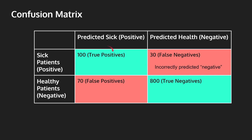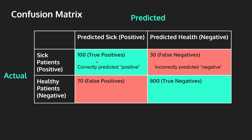The top left square is called the true positive. It basically means our model predicted positive and the patient is indeed sick. So we predicted positive and the patient is positive — this is a correct prediction. Now the bottom right square is called true negatives, meaning the patient is negative and we predicted negative. This is again a correct prediction — we predicted no disease and the patient is indeed not sick.